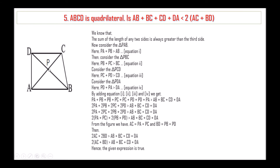Consider triangle PCD: PC plus PD is greater than CD. Consider triangle PDA: PD plus PA is greater than DA. Adding equations 1, 2, 3 and 4 we get PA plus PB plus PB plus PC plus PC plus PD plus PD plus PA is greater than AB plus BC plus CD plus DA.